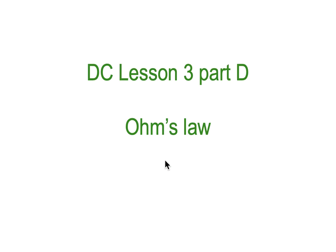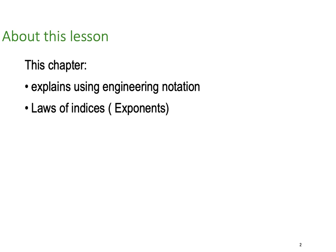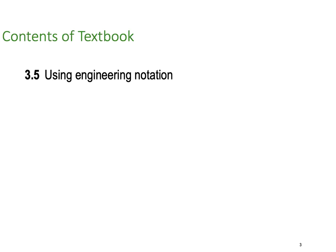Hello, I'm Dr. Ken here with you again. DC Lesson 3, Part D, again on Ohm's Law. But this time we're going to be looking at large numbers and small numbers we use around resistors and using exponents and being able to do some mathematics and take care of those exponents. So in this chapter we're going to be explaining the use of engineering notation. We're going to look at the laws of indices or exponents. We're going to do a full lesson summary of all of parts A through D. So from the textbook, this is section 3.5.